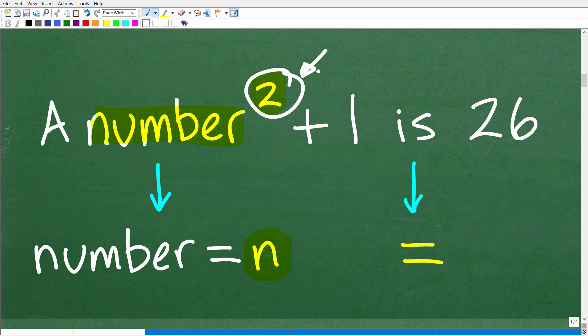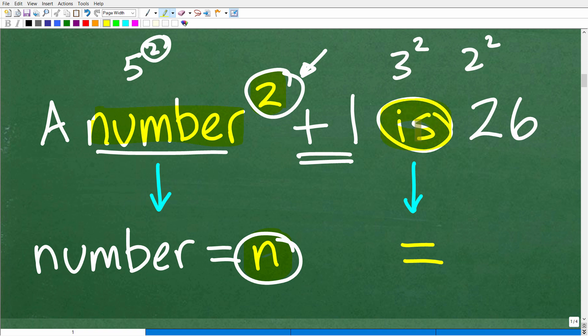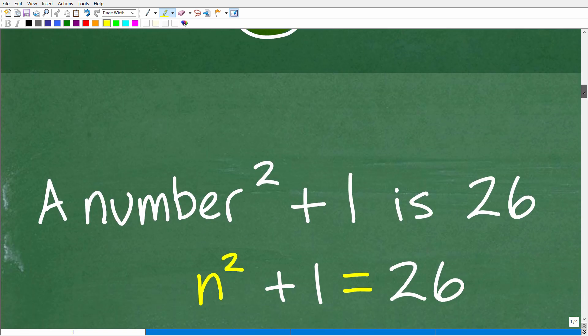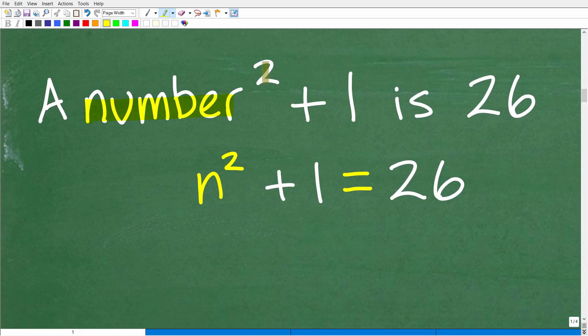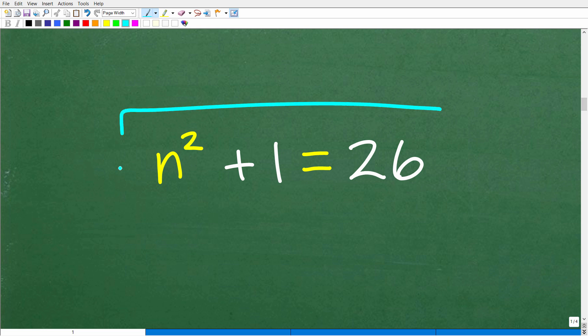What does it mean to square a number? We have to put the exponent of 2. So 3 squared is that, 2 squared is this, and 5 squared is this. So we have to put the exponent of 2 on this number n. The is word is the same thing as the equal sign in mathematics. So n squared plus 1 is equal to 26. If we can solve this equation, we can answer the question.